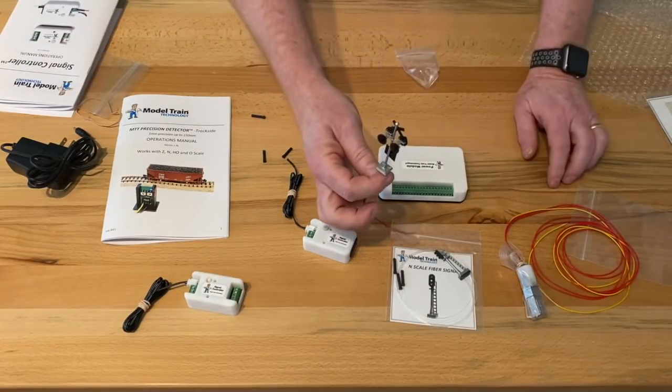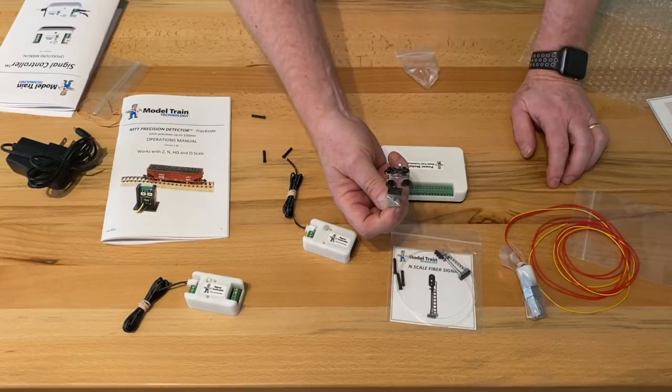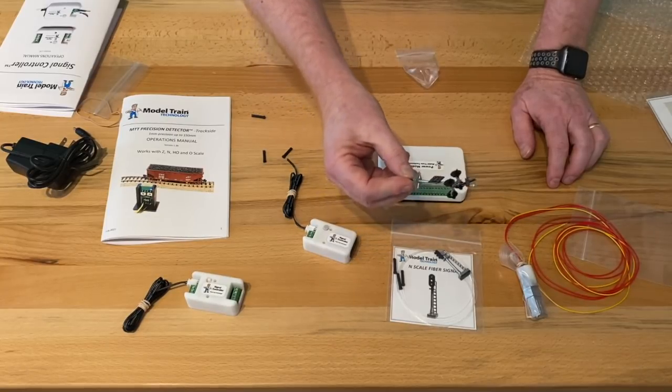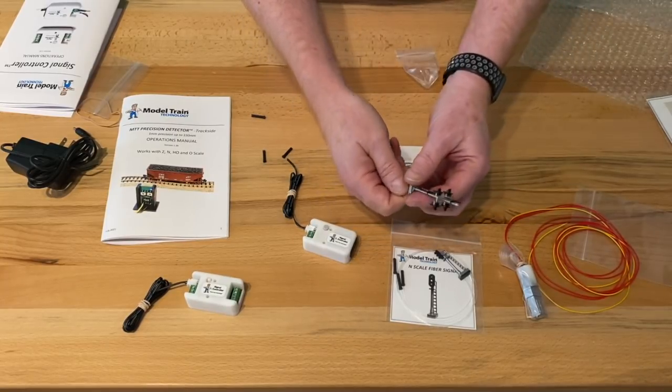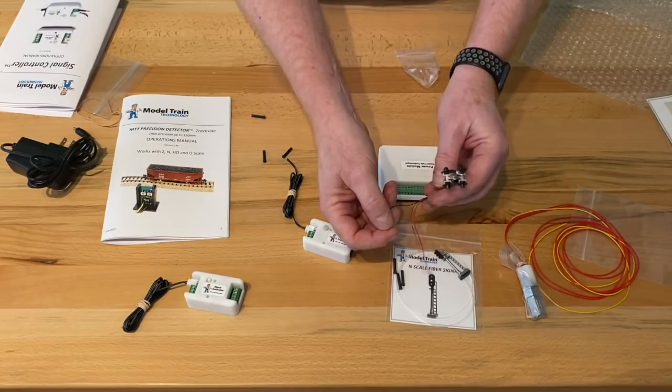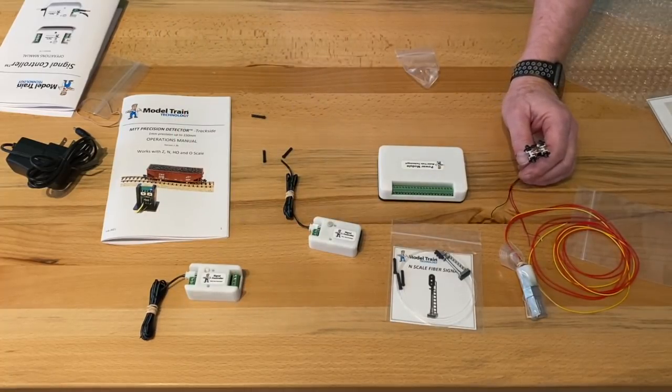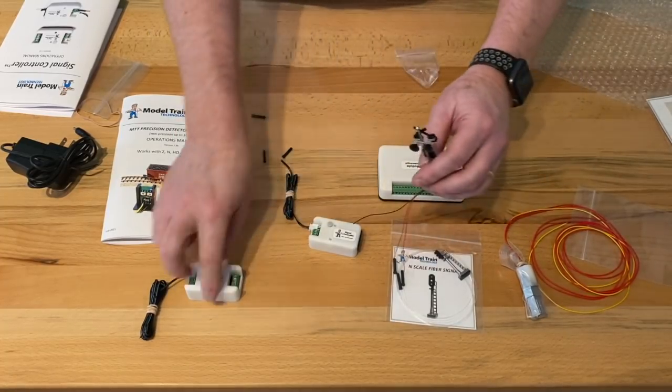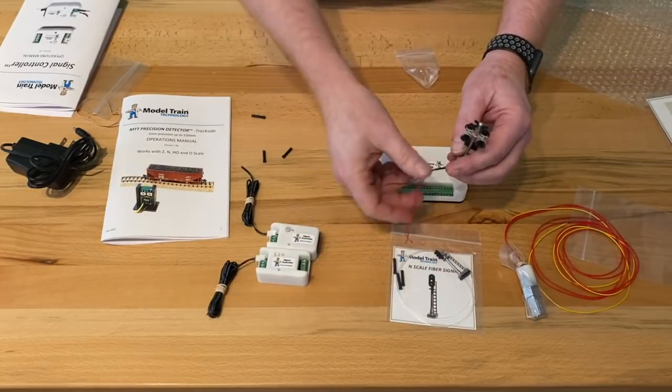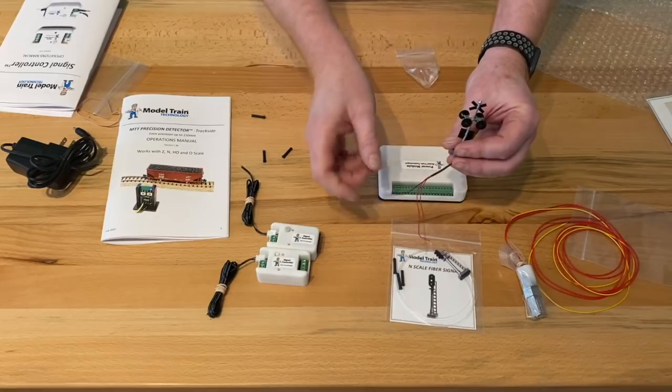So here's a flasher I bought from, I think this is from Amazon for maybe $10. This is an O scale size. And you'll notice that there are three wires coming out of the back. I cut off the resistor. Our signal controllers have resistors built in. You don't need it. If you keep it attached and plug it in, that's perfectly fine. No problem.